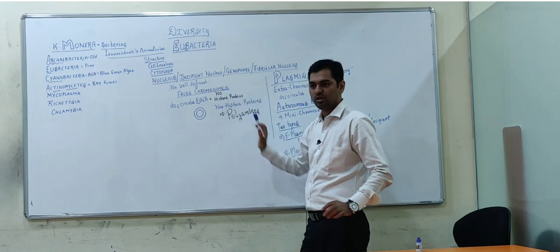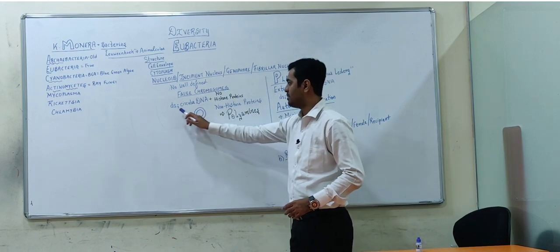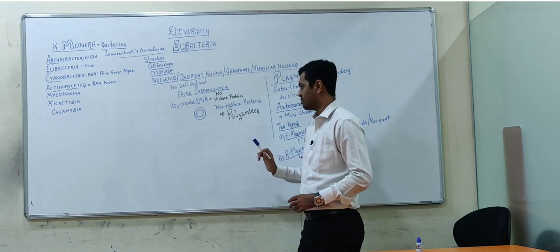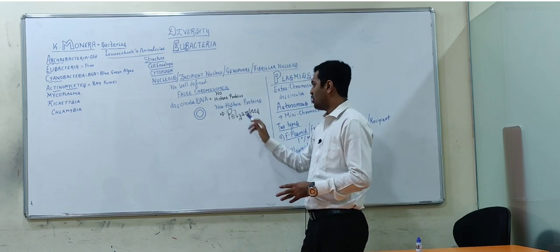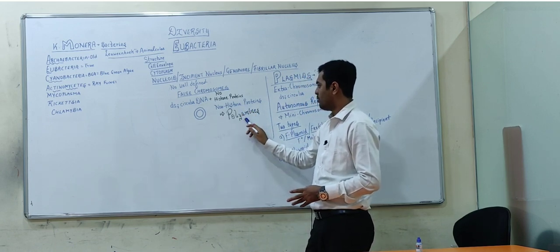The reason is it has no histone proteins present. There is only a double-stranded circular DNA. There is presence of non-histone proteins like polyamines.